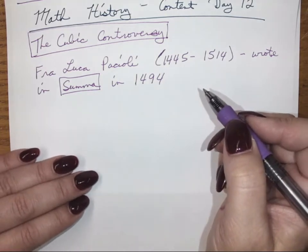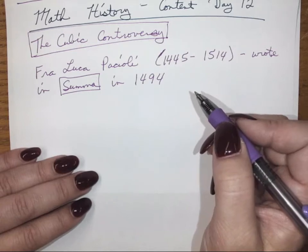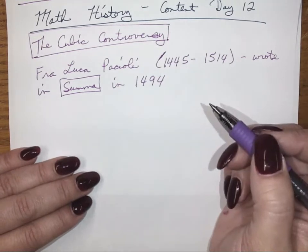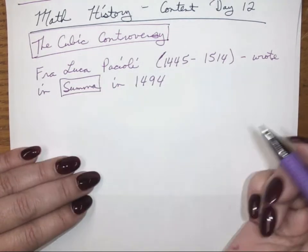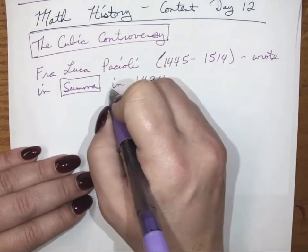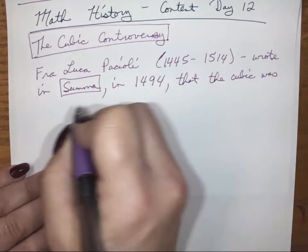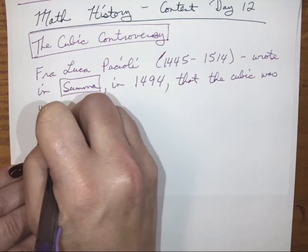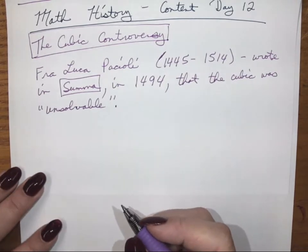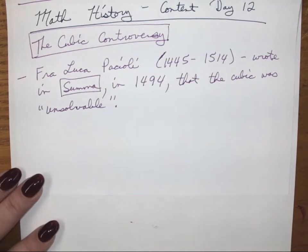We're still not even close to having calculus developed yet, so just think about all the advances that have happened since 1494. But this guy Pacioli, in Summa, wrote that the cubic was unsolvable — basically saying the ancient Greeks couldn't do it and it can't be done.